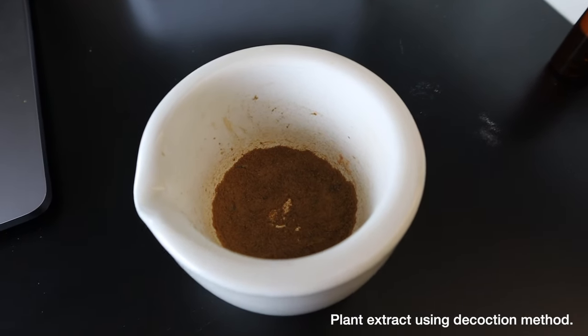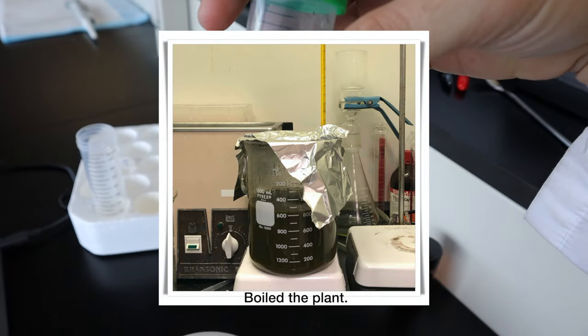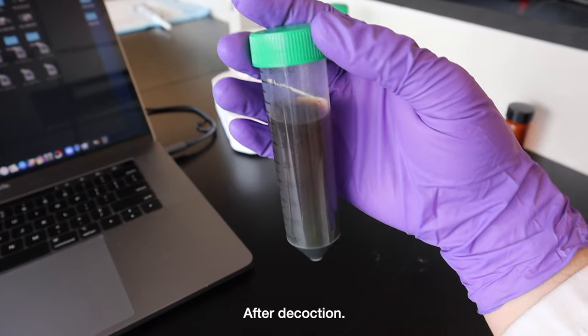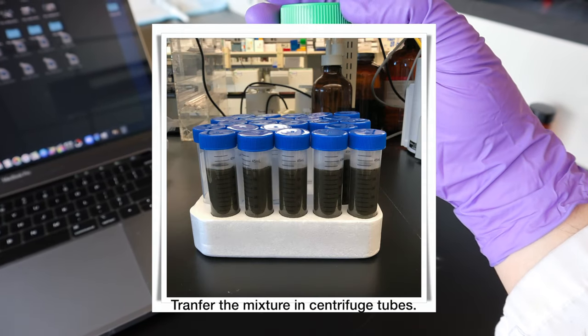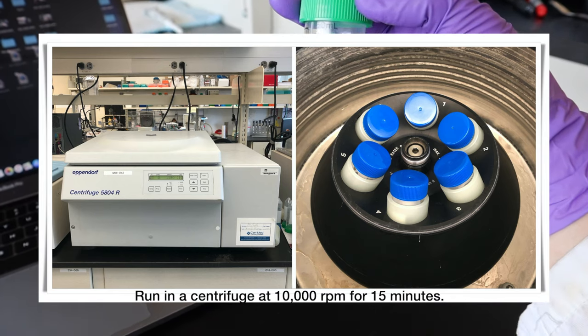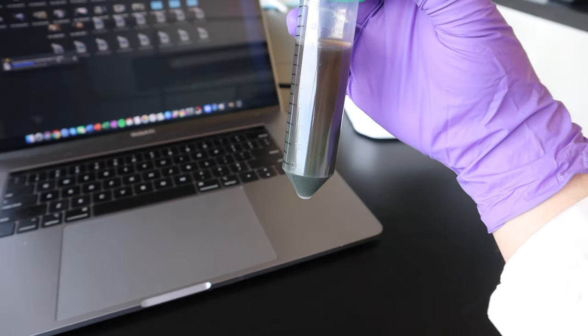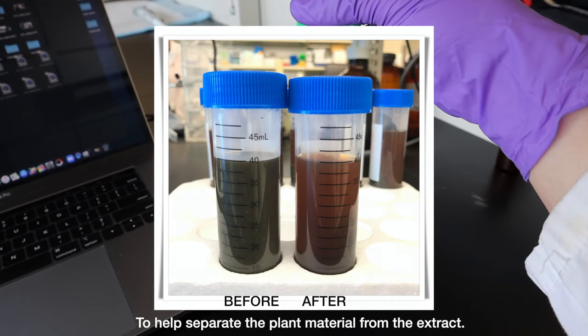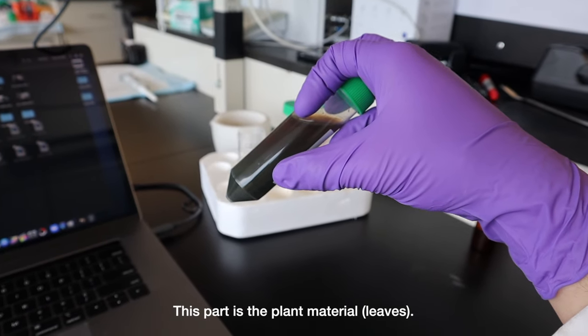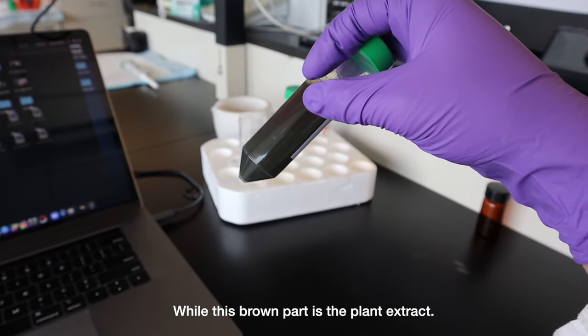Here's a different kind of extraction. We boil the Corchorus olitorius leaves in water. We transfer the mixture in a centrifuge tube. Then, we put it in a refrigerated centrifuge. We have to separate the plant material from the extract. This part is the plant material, while the supernatant part is the plant extract.